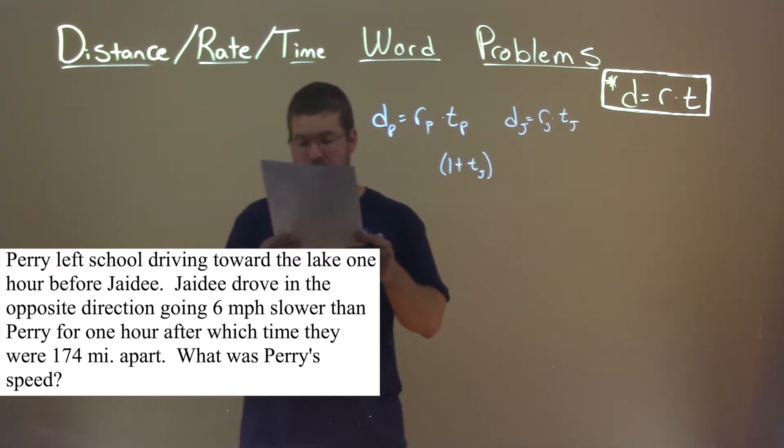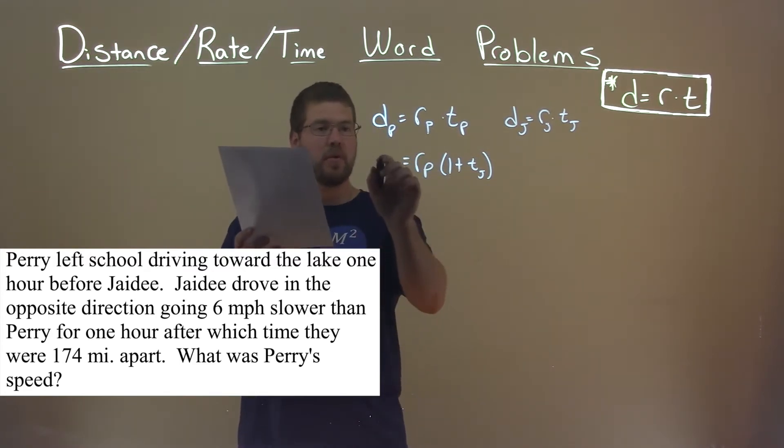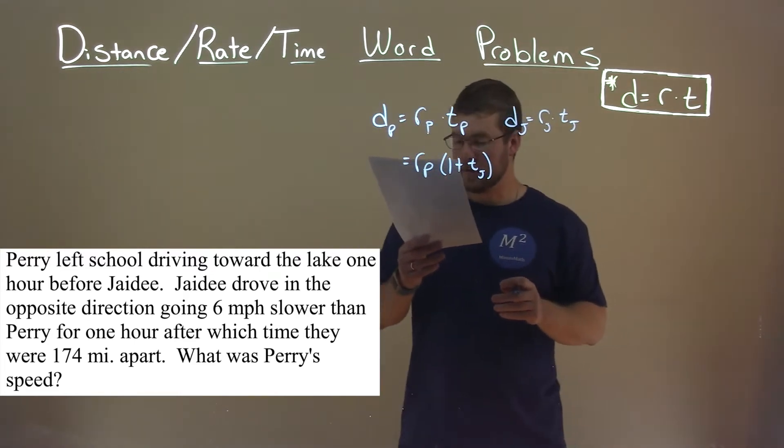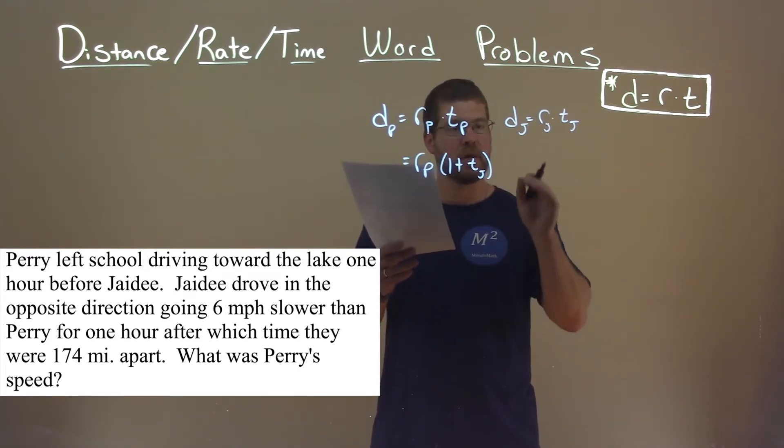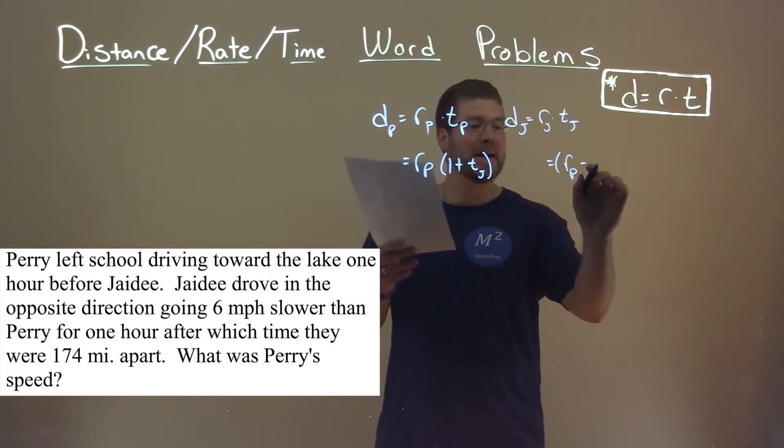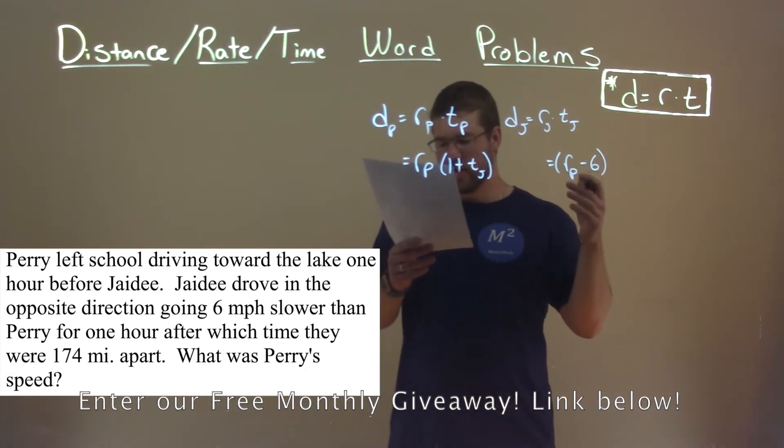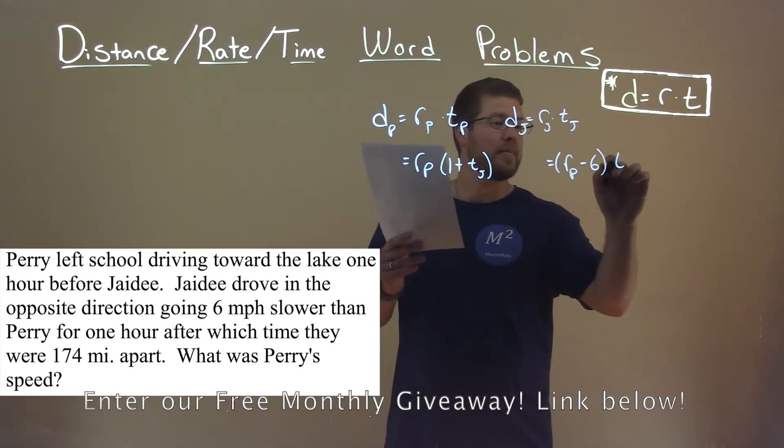Now, we want to find Perry's speed. So that just comes down here. We don't know necessarily the distance individually of Perry, so we're going to hold off on that for a second. Now, let's go with what we know here. They tell us that JD drove in the opposite direction but going 6 miles per hour slower than Perry. So JD's rate can be rewritten as the rate of Perry minus 6 miles per hour. And we don't know JD's time yet. So we leave that there, the time of JD.